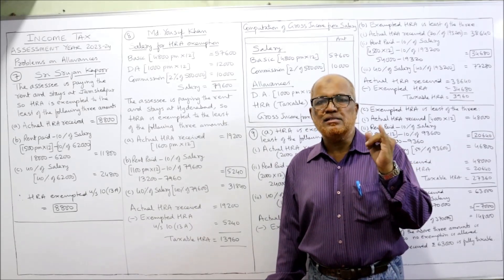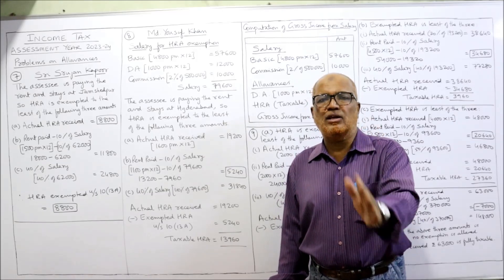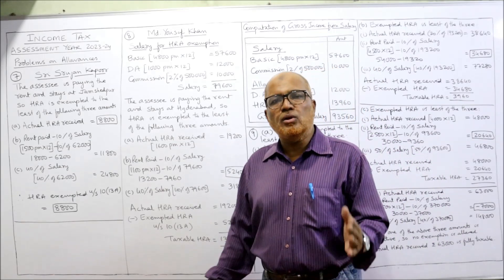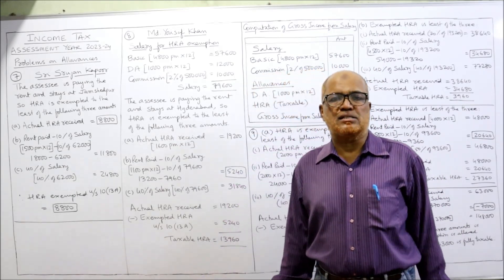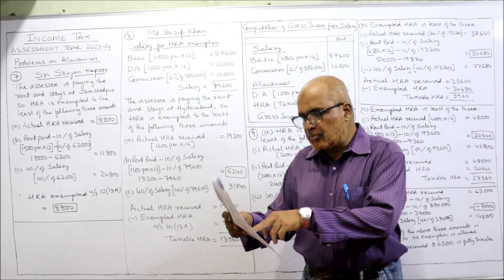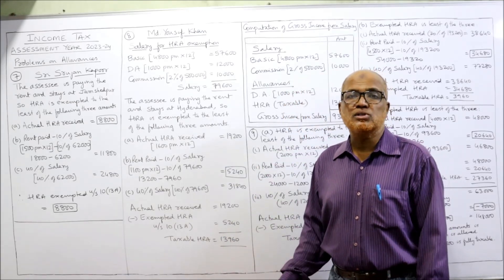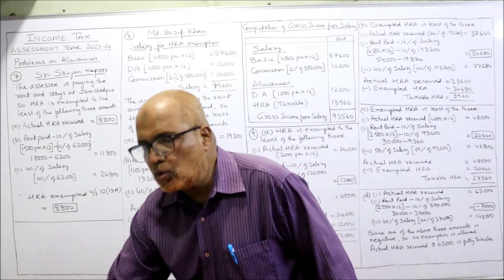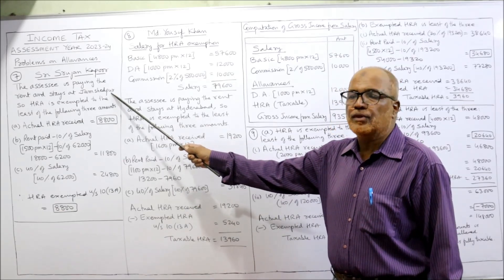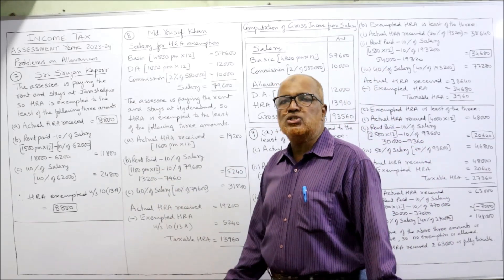Eligibility: the employee must pay rent. Here he is paying rent, so exemption is allowed. Secondly, we check where he stays — in the four metropolitan cities or other towns. Jamshedpur comes under other towns, so 40% of salary applies. Write: the employee is paying rent and stays at Jamshedpur, so HRA is exempted to the least of the following three amounts.